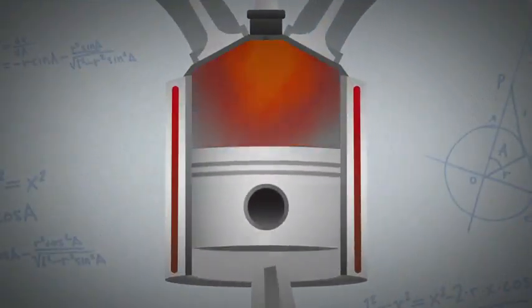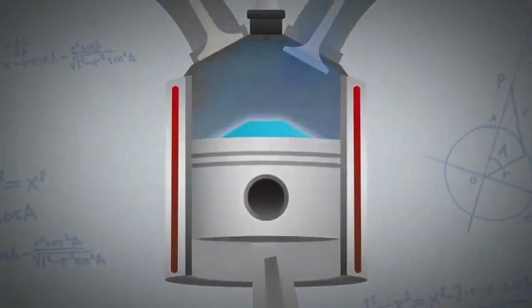To do that, we needed to raise the compression ratio by placing a dome on each piston. Because the more you squeeze the air-fuel mixture, the more energy you get from the combustion.